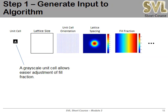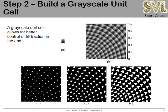When creating the unit cell, it's best to use a grayscale unit cell rather than binary. If we start with a binary unit cell, we end with a binary-looking result and have very little control over fill fraction via the threshold parameter. Starting with a grayscale unit cell gives full control over triangle size and fill fraction. Spatially varying the grayscale unit cell using, say, a rainbow orientation pattern produces a complex-looking lattice from which fill fraction can be continuously adjusted.